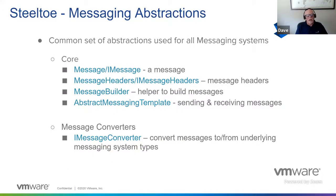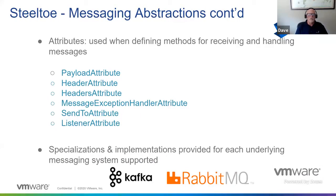We have abstractions for defining what a message is, what a message header is, and how to build a message. We have templating technology for sending and receiving messages, and built into this is support for message converters — so you can send an object like an order and the message converter technology will convert it into whatever is needed to get it across the wire. We also have attributes for controlling and extracting things in and out of messages, for example extracting just the payload. These attributes apply to all different kinds of underlying messaging systems.